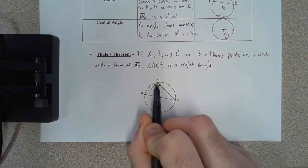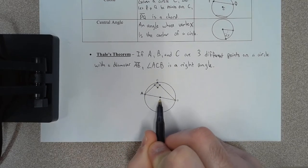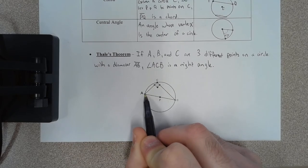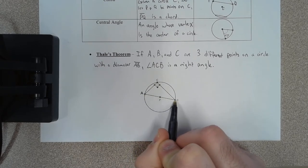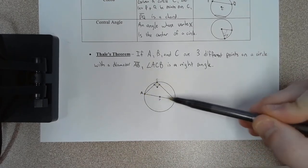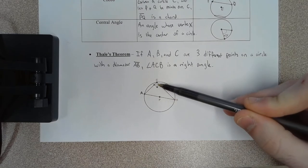so here we've got points A, B, C, where P is the center, we can just ignore that for right now, but the diameter is A to B, then that means this angle C, or angle ACB, is going to be a right angle.